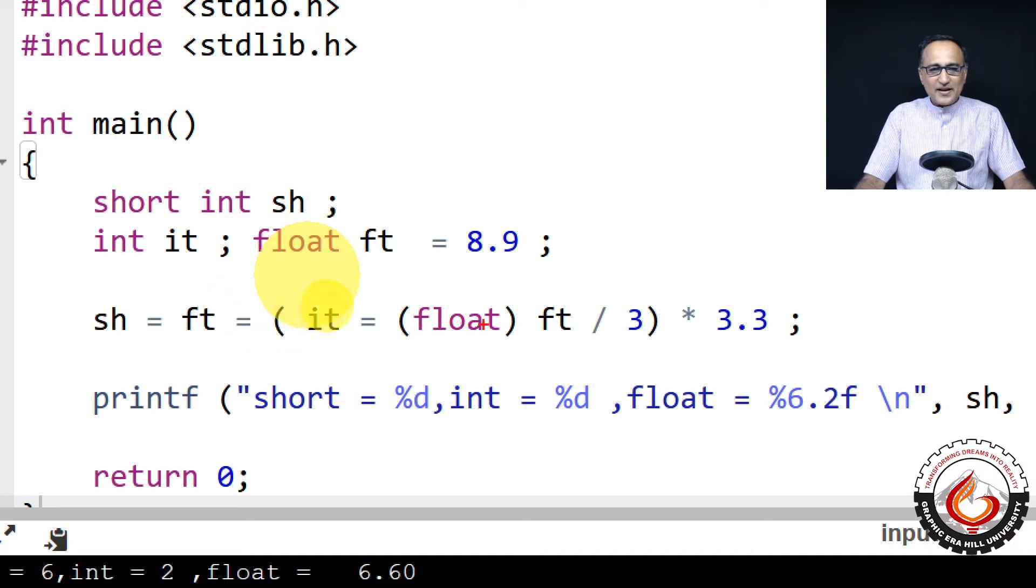What I have done is in the inner bracket, I have typecast float to float. Float is already 8.9, so it's not going to make any difference. 8.9 divided by 3 - 3 becomes 3.0 - so 8.9 divided by three comes to roughly 2.9, something like 2.997.